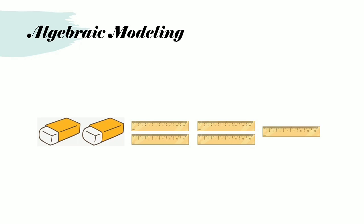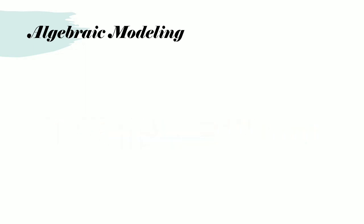But what if we had two erasers and five rulers? Can we model this? Then we can use one of the erasers to represent one eraser and one of the rulers to represent one ruler. So we have this. But what if we replace the eraser with the letter E and the ruler with the letter R? Then we can have this: 2E plus 5R.